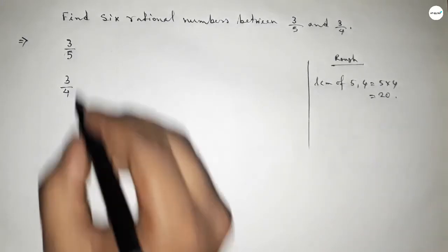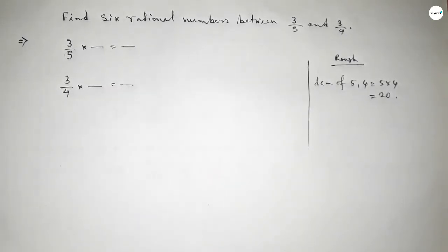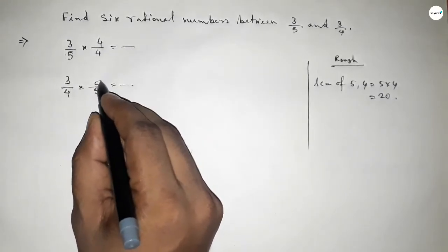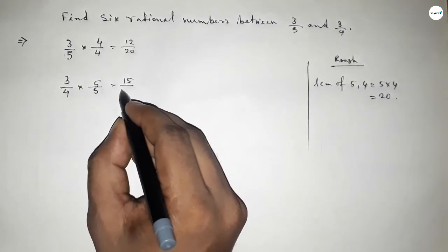Now what should be multiplying here up and down and here up and down to get the denominator 20 for both? If you put here 4 and here both 5 up and down, then we can get 12 over 20 and this is 15 over 20.